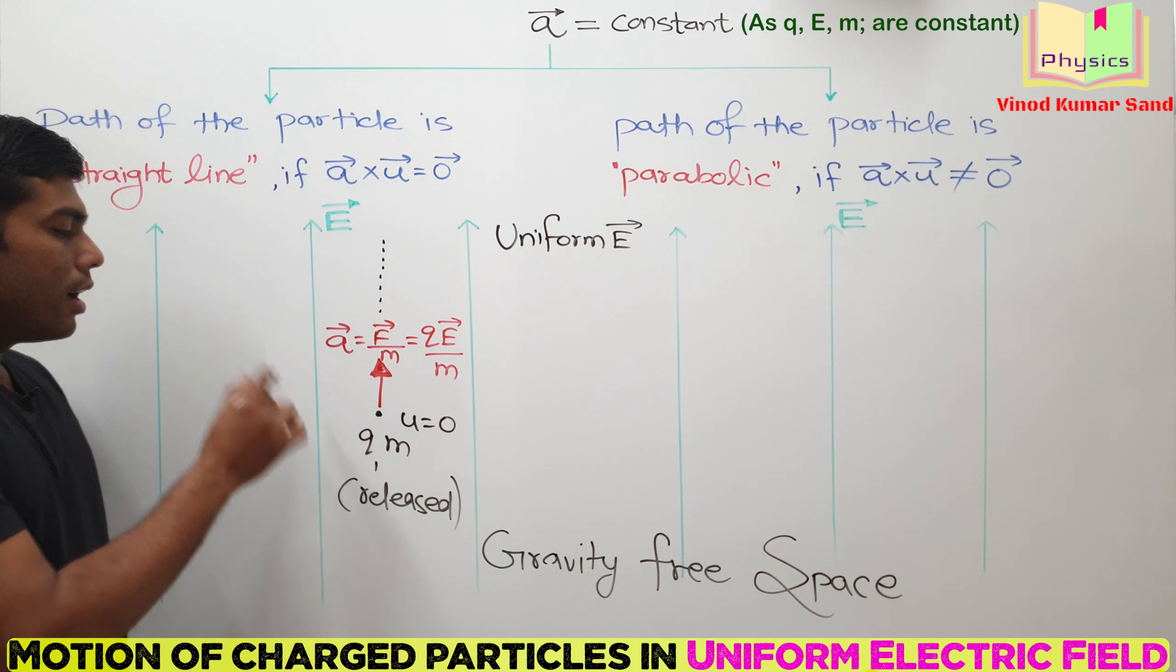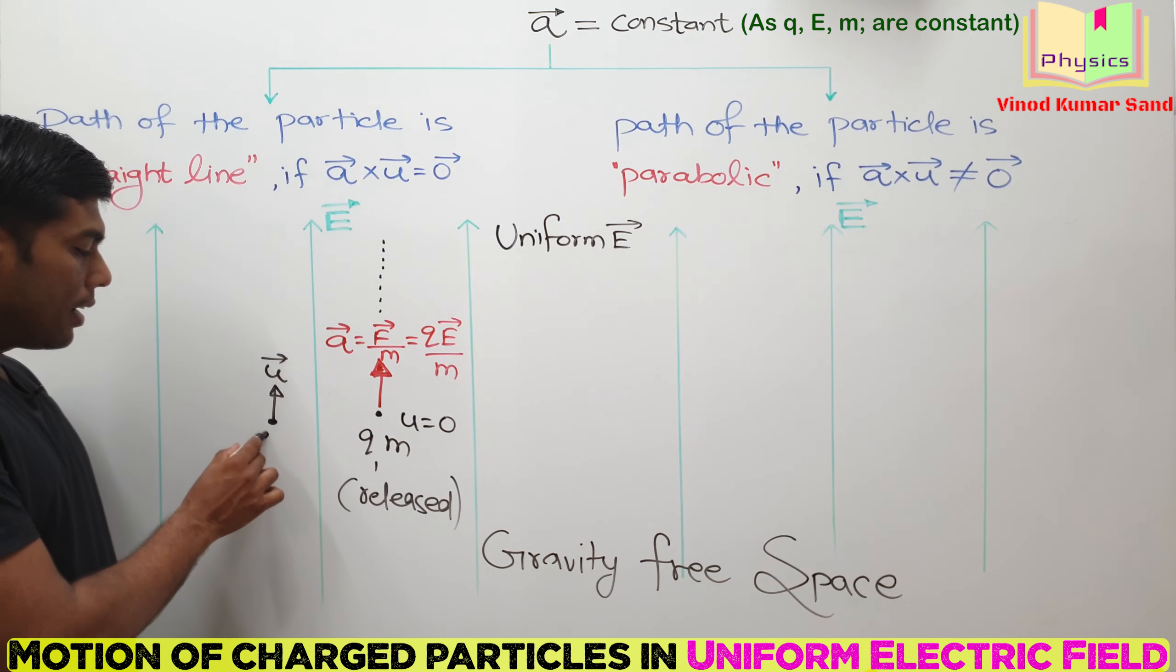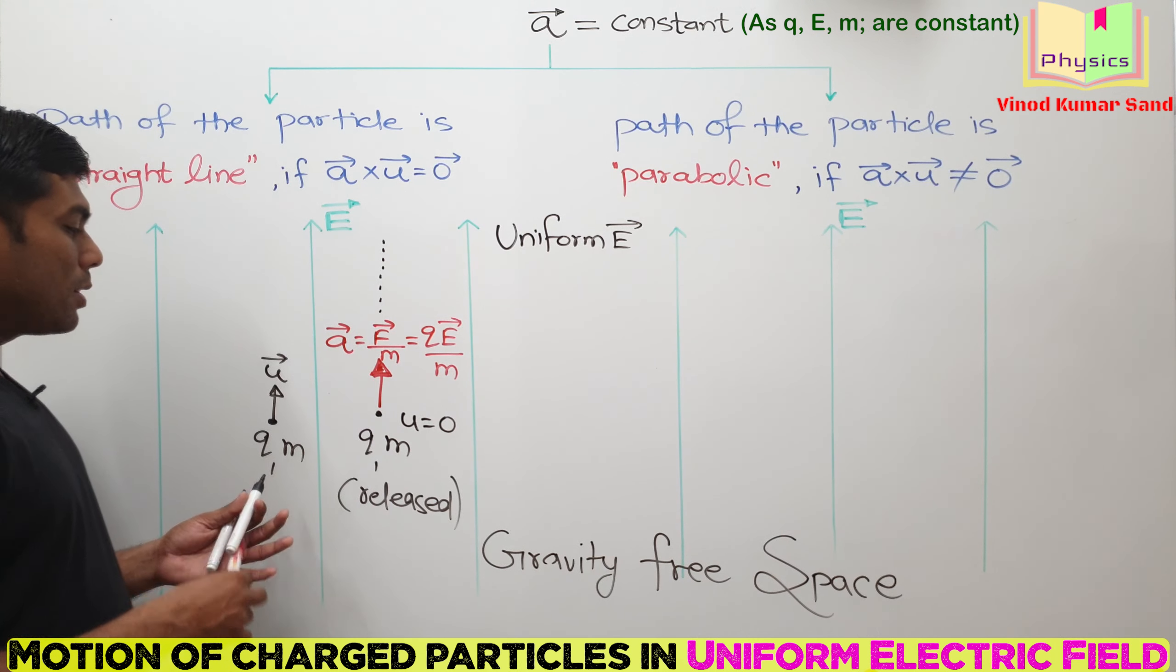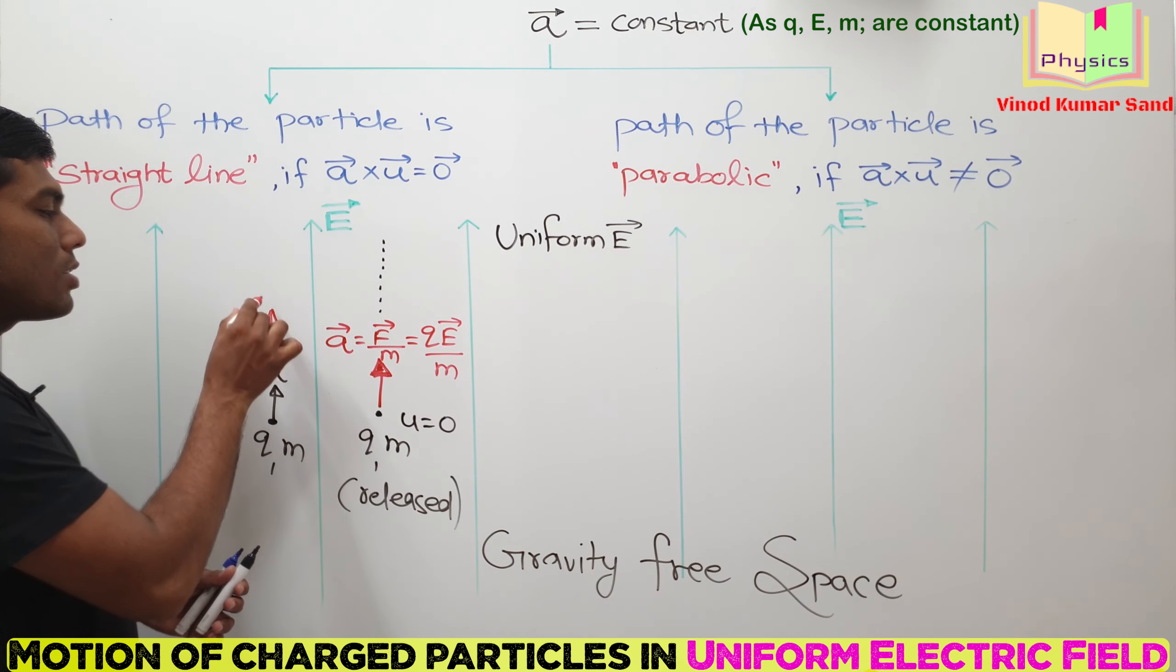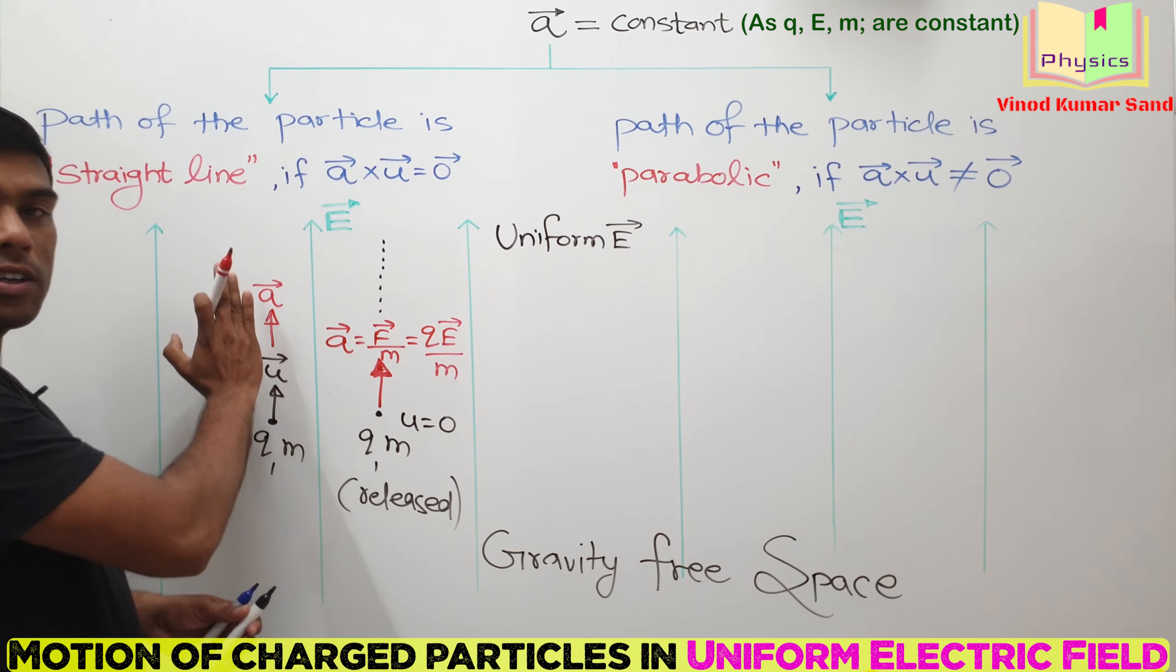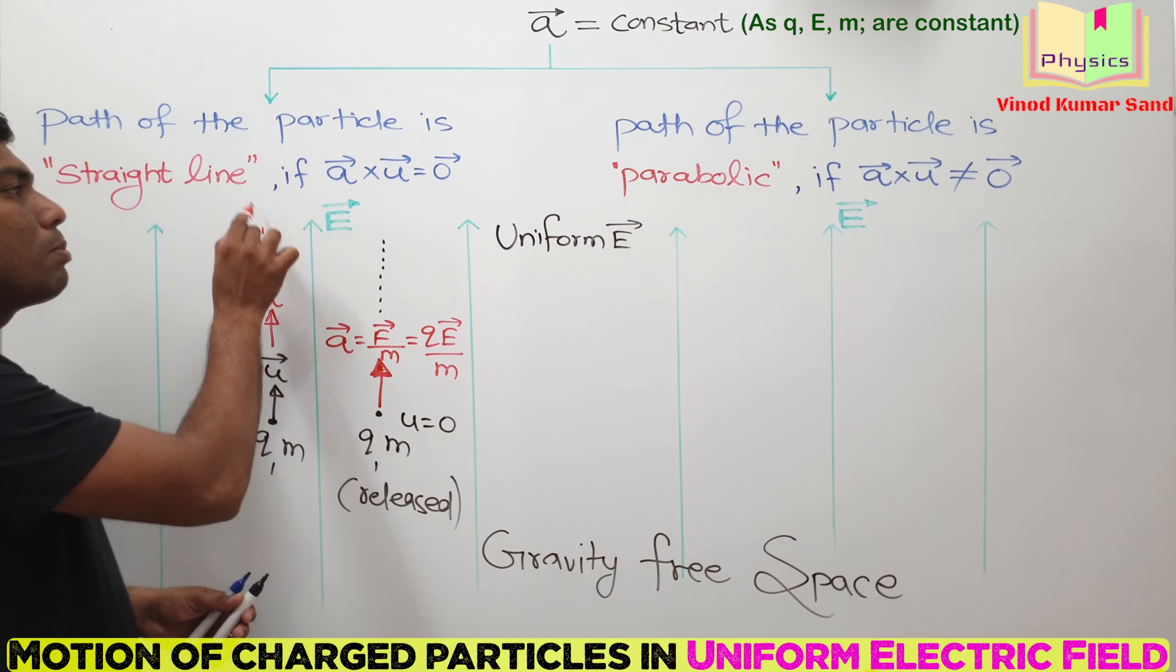Another case. Suppose a particle is projected upwards. U vector is like this. Particle has charge Q, mass M. What will be the path of this particle? Again, the path will be straight line because A vector is in this direction. Same charge, so A vector is in this direction. The path will be straight line.